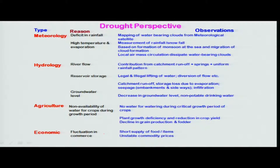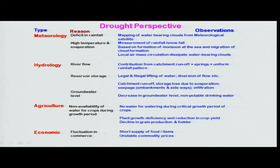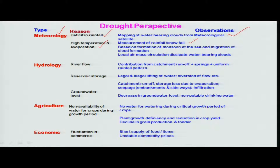Drought is viewed differently by different specialists. Meteorologists describe meteorological drought, which happens due to a deficit in rainfall, high temperature, and high evaporation causing heavy water losses. What is done in this context includes water mapping of cloud-bearing clouds, measurements of snow and rainfall to quantify information, and studying local circulation to assess whether it can dissipate water-bearing clouds in the area. When rainfall deviates from the mean average, it is called a meteorological drought.